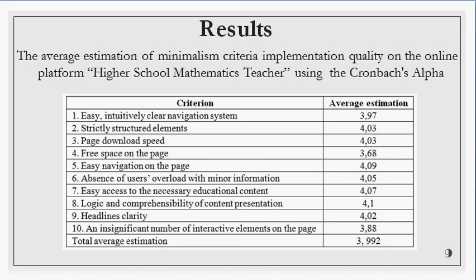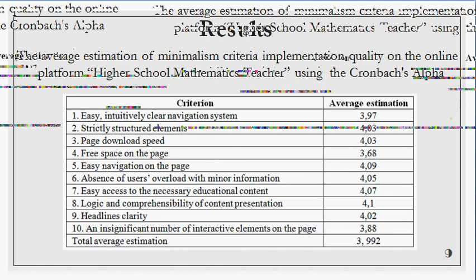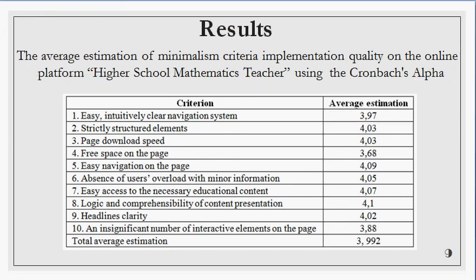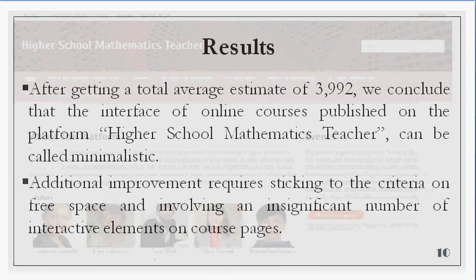To verify the internal consistency of the survey results, we calculated Cronbach's alpha. As a result of the calculation, we got the value 0.71, indicated as an efficient level of internal consistency. Following the survey results, an average estimate of the given criteria implementation quality was calculated and is represented in this table. After getting a total average estimate of 3.99, we conclude that the interface of the online course published on the platform High School Mathematics Teaching can be called minimalistic.